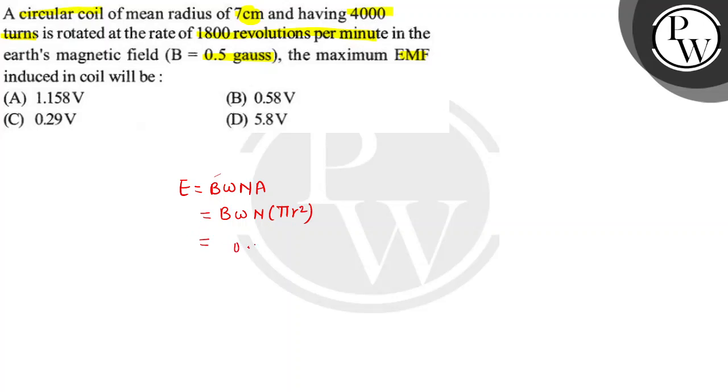This is 0.5 into 10 raised to the power minus 4, into 2 pi by 60 which is omega, into 1800, into 4000 that is total number of turns.